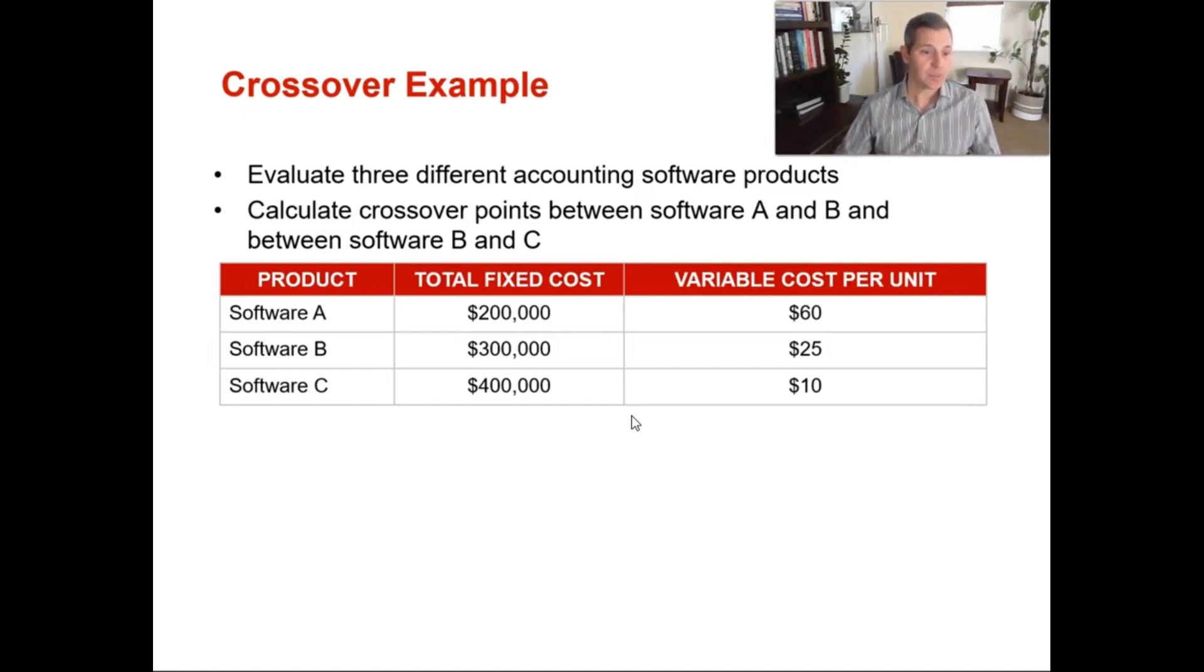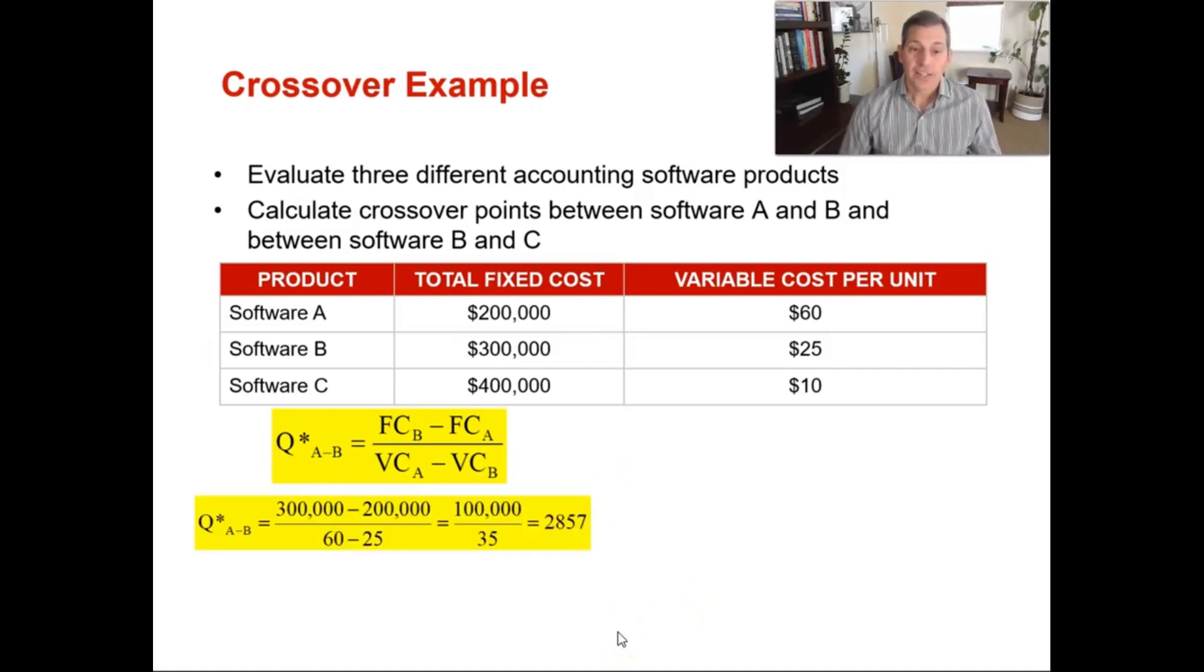Let's do this example together. Our first formula is the crossover point for A and B. You're going to take $300,000 minus $200,000 over your variable costs of $60 minus $25. So that's your fixed cost of B, which is $300,000, minus your fixed cost of A, which is $200,000, over your variable costs. For A it's $60 and for B it's $25. Therefore, $100,000 divided by 35 gives you a crossover point between A and B of 2,857 units.